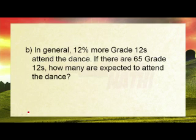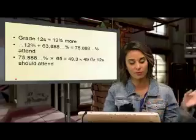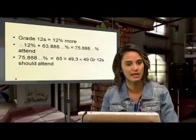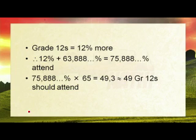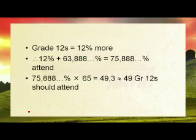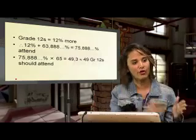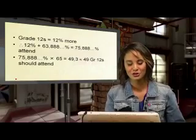In general, 12% more grade 12s attend the dance. If there are 65 grade 12s, how many are expected to attend? We add 12% onto our original percentage of 63.888%, giving us 75.888%. Then 75.888% times 65 learners gives us 49.3 — we can't have a third of a person, so we round down. Only 49 grade 12 learners should attend.